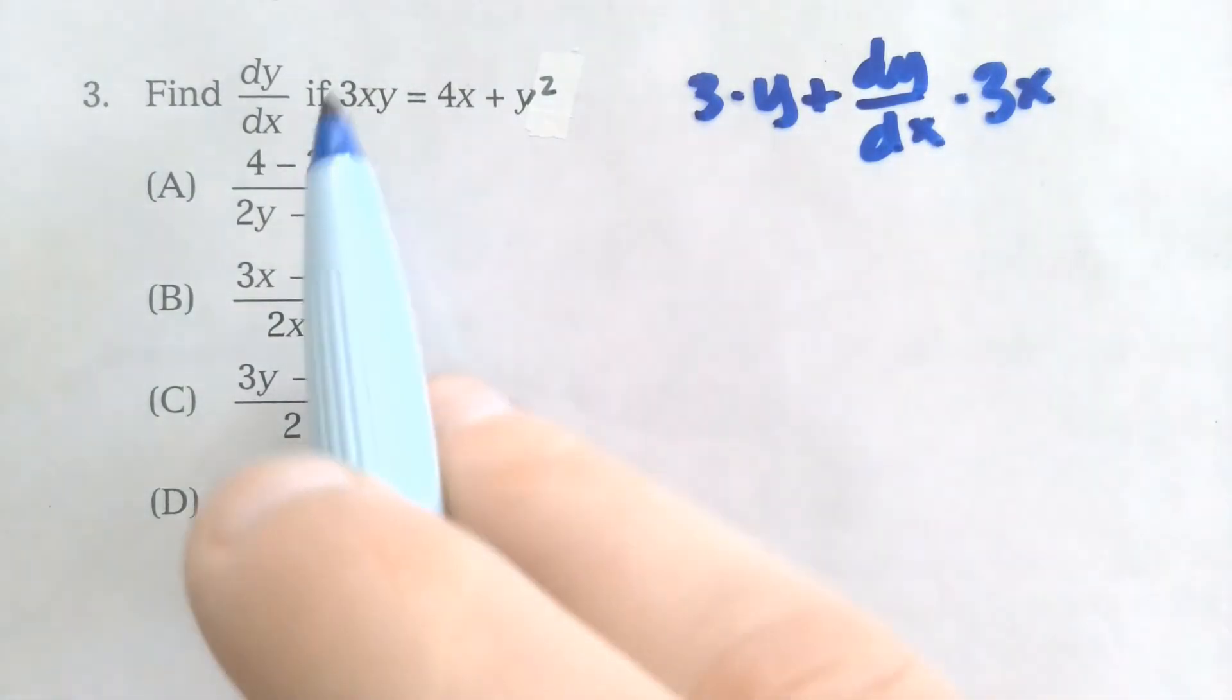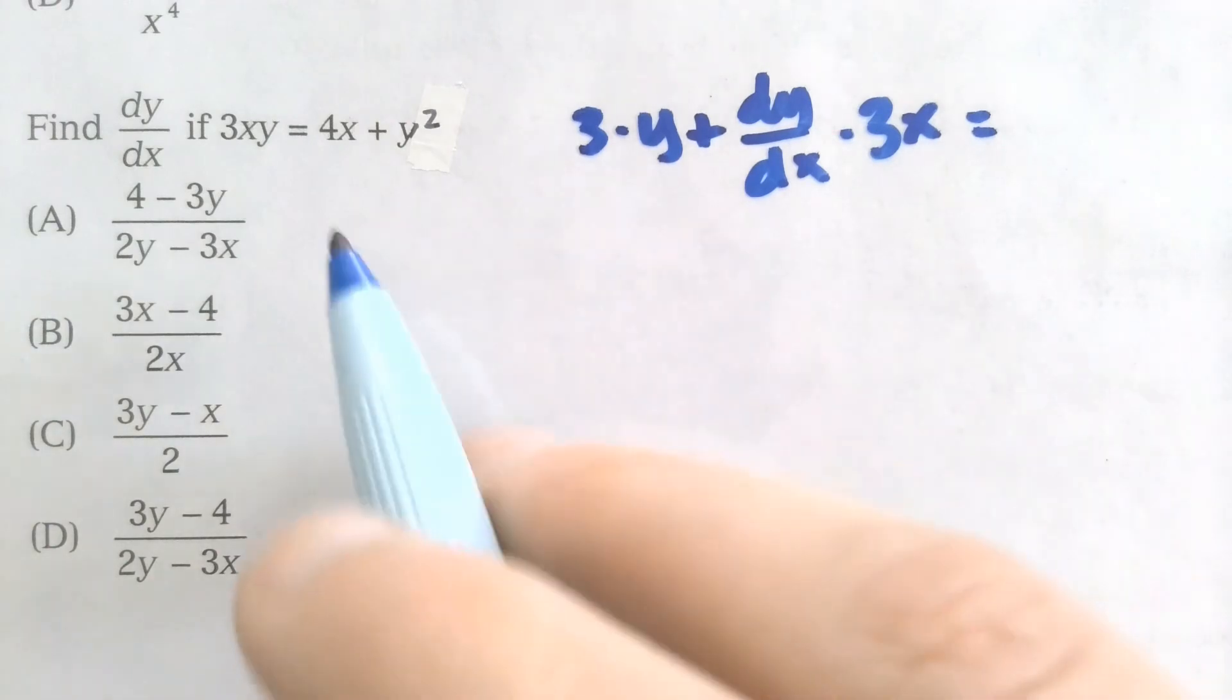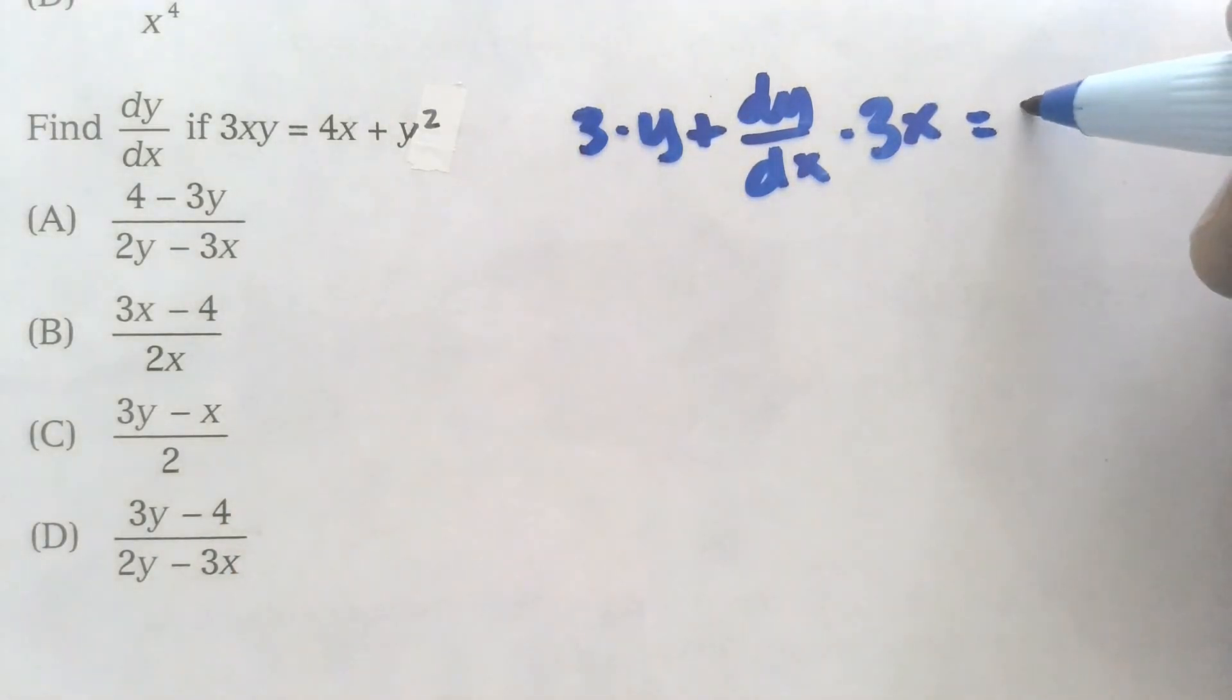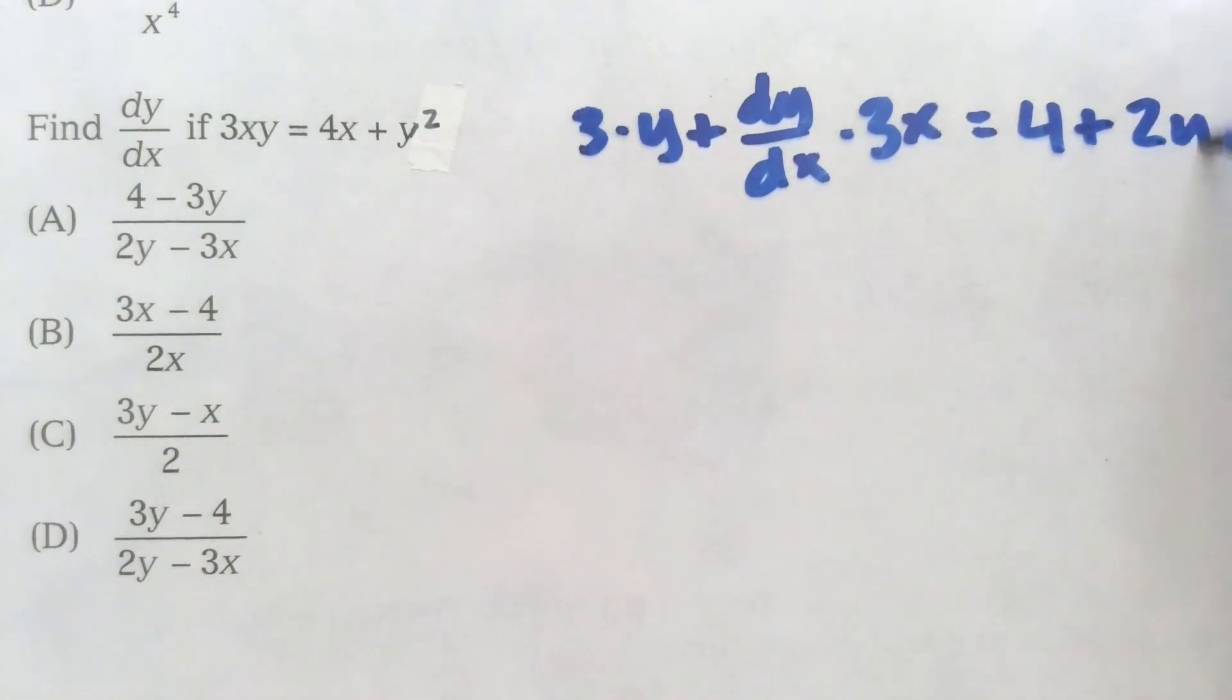And remember, anytime you're taking the derivative of y, you're going to have that dy dx for the derivative of y. On the right side, I have that the derivative of 4x is 4. And then our y squared derivative is 2y dy dx.